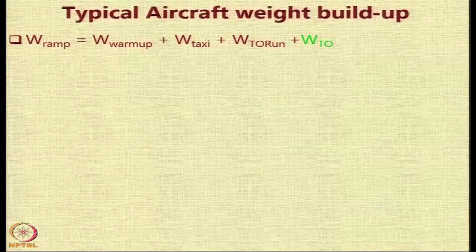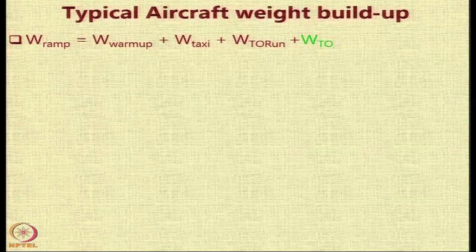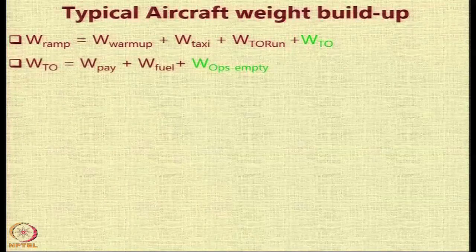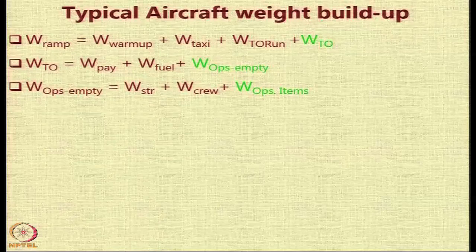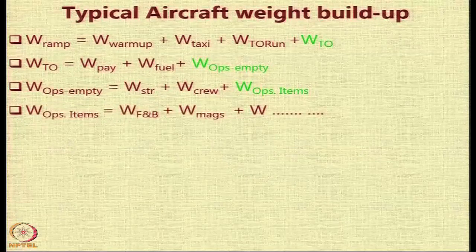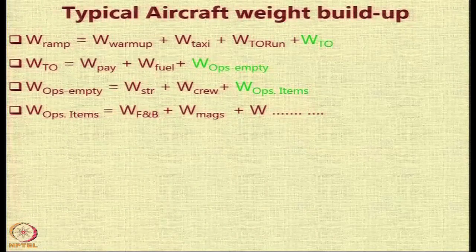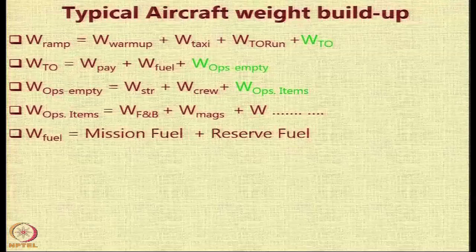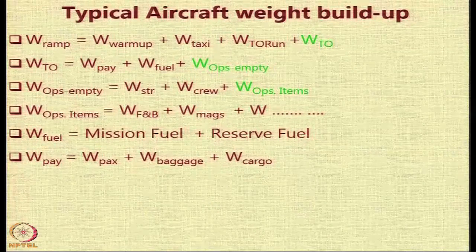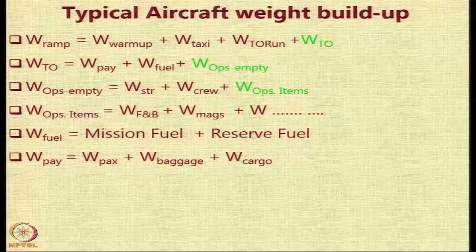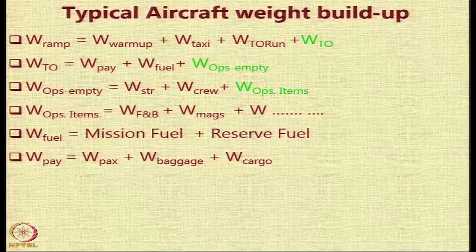Let us see how the weight is built up. The ramp weight equals the fuel required for warm-up, taxi, and the takeoff run plus the takeoff weight. The takeoff weight consists of payload, fuel, and operating empty weight. The operating empty weight includes structure, crew, and operational items such as food, beverages, magazines, and other items the airline provides. The fuel weight has two parts: mission fuel and reserve fuel. The reserve fuel is not to be used for the mission — it is a safety margin for diversions, holding, weather-related changes, and in-flight errors.